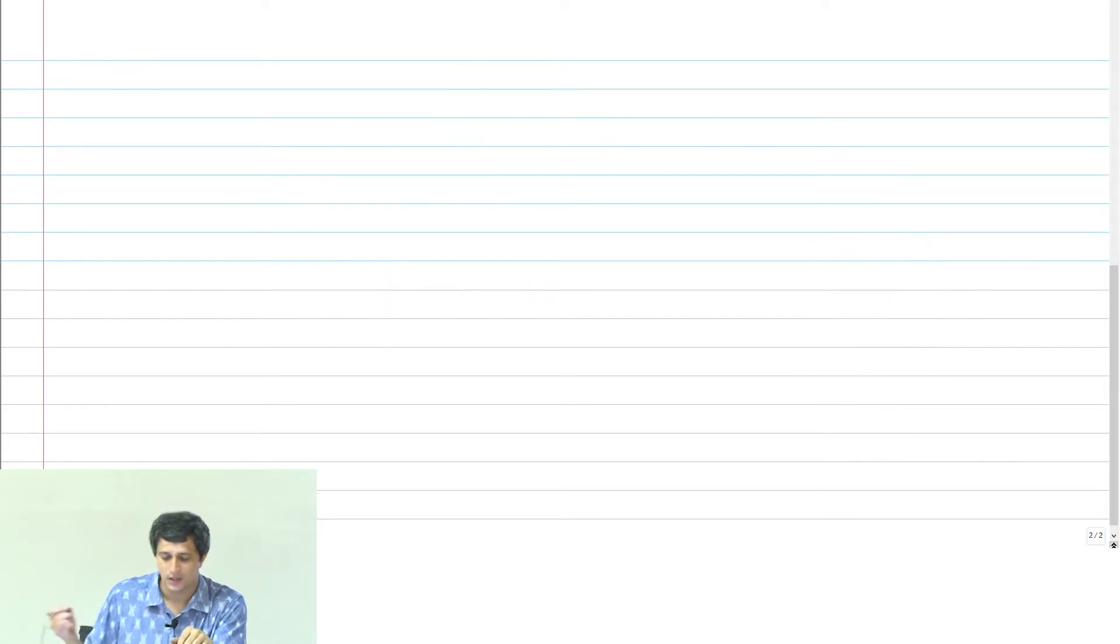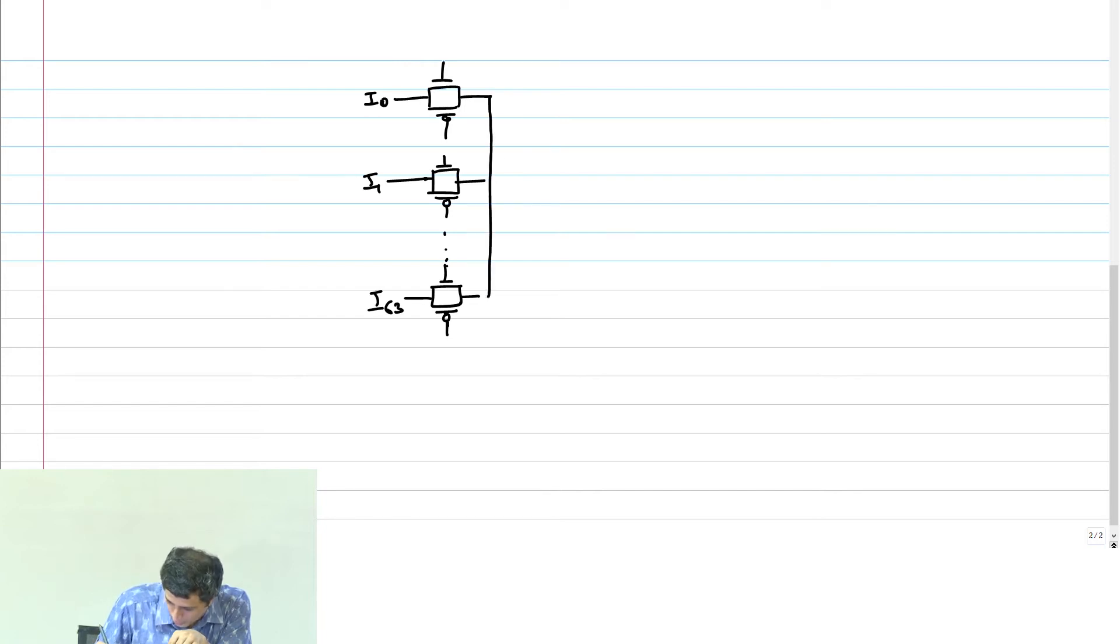For example, if I want to implement let's say a 64-to-1 mux, what do I need to do? I basically need to simply do this. This is I1 or I0, all the way down to the 64th, I63. And I can simply wire-OR all these connections and get my output Y which is a 64-to-1 mux.